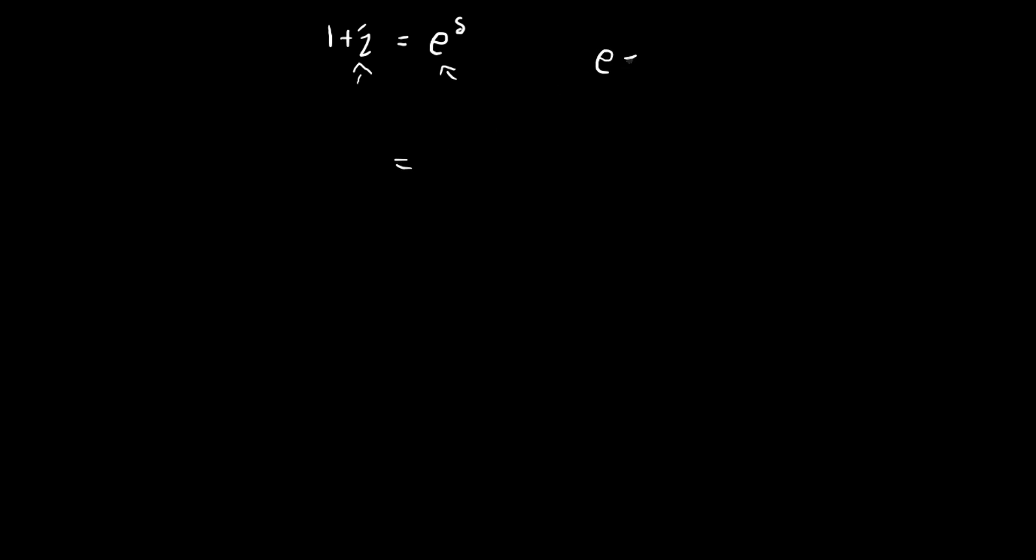I also want to bring up the definition of e itself. e is equal to limit n tends to infinity for this expression. So using this definition we can actually rewrite e to the power of delta as limit n tends to infinity for 1 plus delta over n to the power of n.